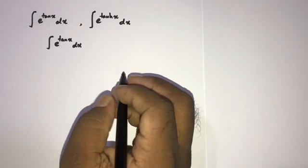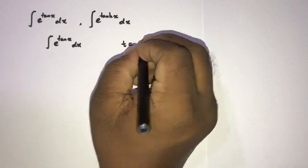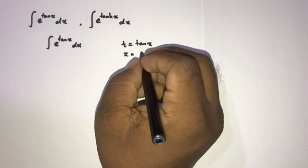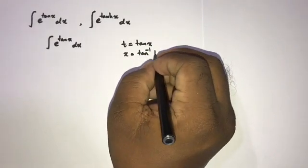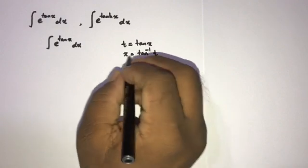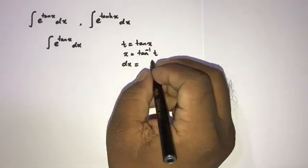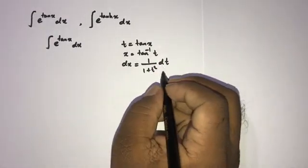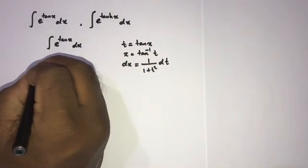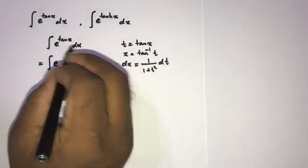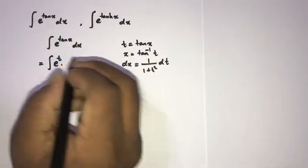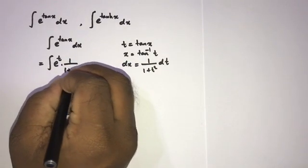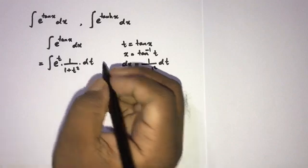We can use substitution method. If we take t equal to tan(x), then x is equal to inverse tan of t. Now differentiate with respect to t, so we can write dx is equal to 1 over (1 plus t squared) dt. Now we can plug in here: e to the tan(x) becomes e to the t, and dx is equal to 1 over (1 plus t squared) dt.